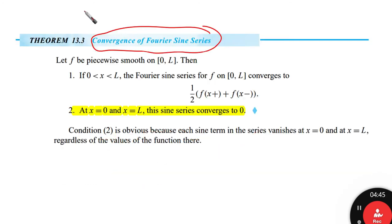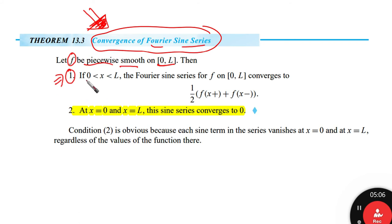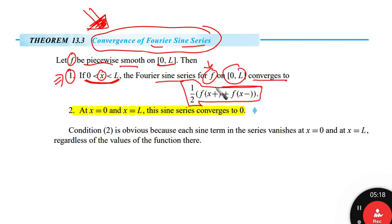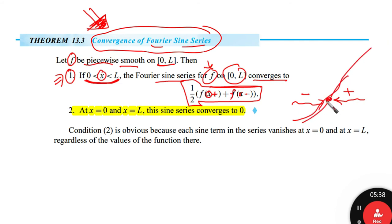Let's look at the convergence of the Fourier sine series. If our function is piecewise smooth on the interval from 0 to L, then the first convergence point: if x is inside the interval, between 0 and L, the Fourier sine series converges to half of the function from the right plus the function from the left — convergence from right and left at any interior point.